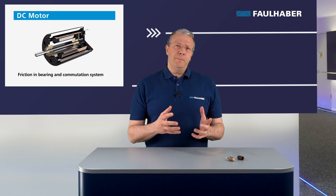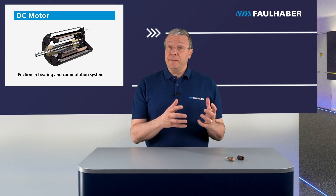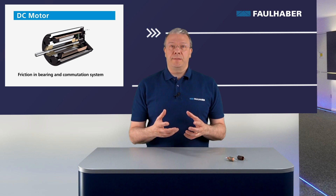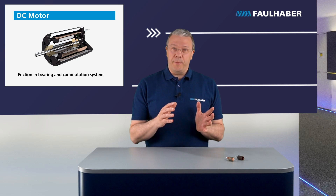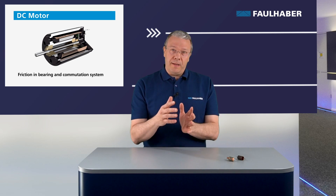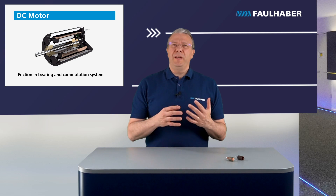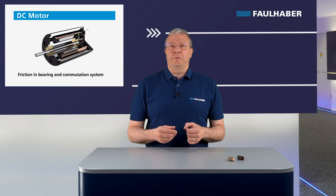DC motors have a fixed magnet in the stator while the winding rotates in the air gap between the magnet and the housing. The losses are typically only related to the friction of bearings and the commutation system.